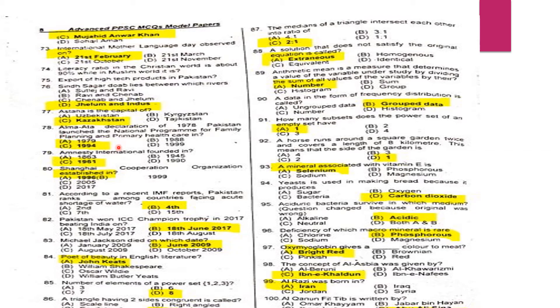MCQ 78: Pakistan launched the national program for family planning and primary health care under the Alma Ata Declaration of 1978. When it was launched, it was in 1994.